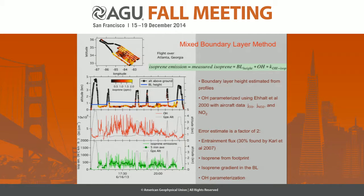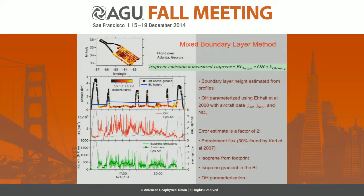Here is shown how the mixed boundary layer method works for one flight. The flight track is color-coded with isoprene, and the altitude profile is also color-coded with isoprene, showing how high isoprene mixes. Isoprene and other tracers are used to determine the boundary layer height shown in blue. OH is taken from a parameterization suggested by Hardt et al., which uses J values and NO2 as input to parameterize OH. Multiplying this out using the formula gives isoprene emissions along the flight track, shown here using five-minute averages for the quantitative comparison.